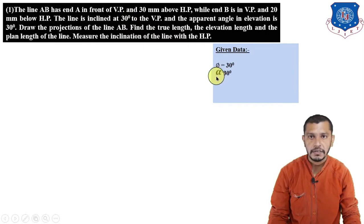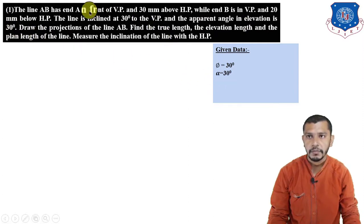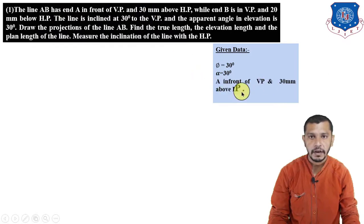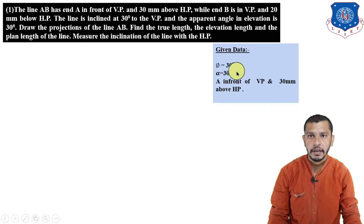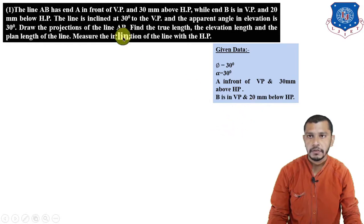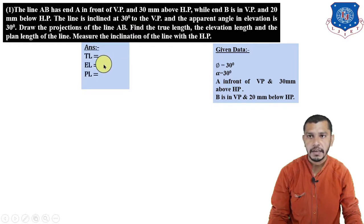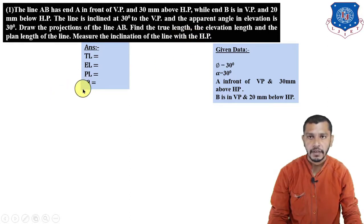The given data: φ is 30 degrees because the angle of inclination of the line with the vertical plane is given as 30 degrees. Alpha is also 30 degrees because the apparent angle in elevation is 30 degrees. A is in front of VP and 30 mm above HP — the distance in front of VP is not given. B is in VP and 20 mm below HP. Using this data we have to draw the projections and find the true length, elevation length, plan length, and inclination with the horizontal plane.